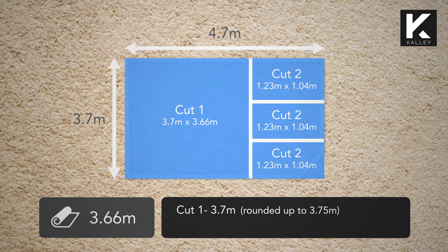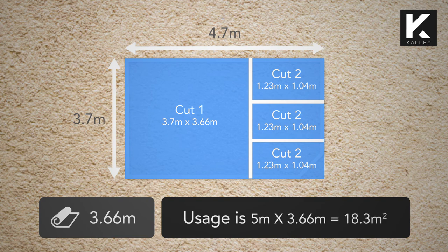Cut number 1 is 3.7 metres, rounded up to 3.75 metres. Cut number 2 is 1.23 metres, rounded up to 1.25 metres. Total usage is 5 metres by 3.66, equaling 18.3 metres squared.